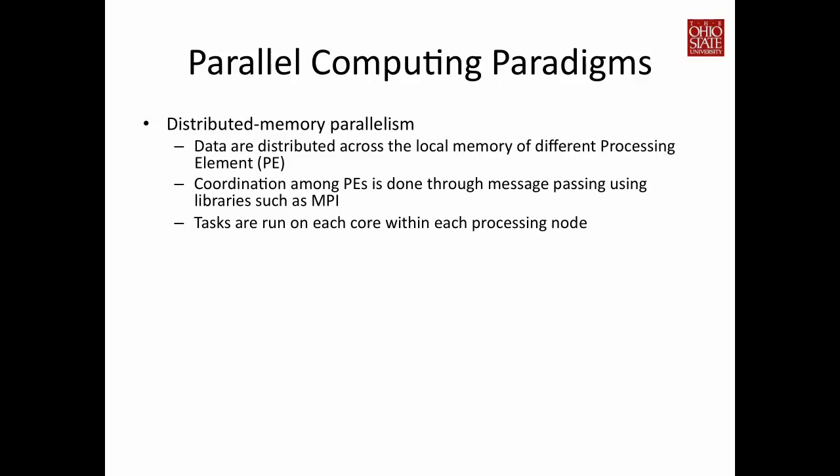Depending on the type of machine you use, you need different types of parallelism. Distributed memory parallelism is typical for most supercomputers with distributed memory architecture. You divide the data into small pieces and distribute them to different processing elements. To handle communication — for producing intermediate results or combining final results — you rely on message passing libraries such as MPI. If a processing node has multiple cores, you can run tasks within that node in parallel as a multi-core algorithm, since intra-node communication is much faster than inter-node messaging.